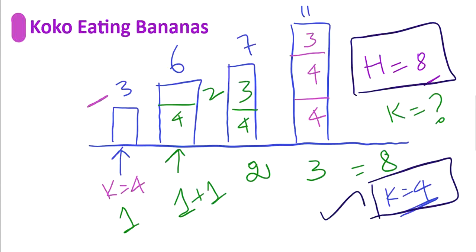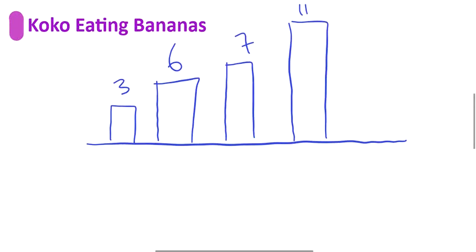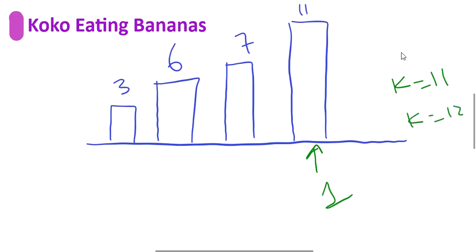So how are we going to decide? We can approach this using binary search. Since Koko can only eat bananas in a single pile per hour, the maximum number of bananas she would ever need to eat in one hour is 11 — the maximum pile size. So if the speed is 11 she can finish the largest pile in one hour. Even if the speed is 12 or 13, she can eat at most 11 bananas. So we know the answer lies between 1 and 11.